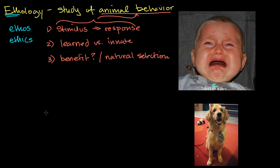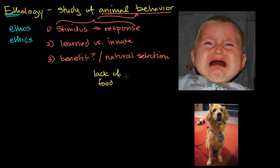Now that we have our framework, let's think about some animal behaviors. Right over here I have a baby crying. And yes, we humans — it's nice to remind ourselves that we are animals. We should feel very proud to be part of this animal kingdom. The behavior here is the child crying, and I'll assume this child is maybe hungry. So in this context, the stimulus is a lack of food, and it leads to the response of crying.